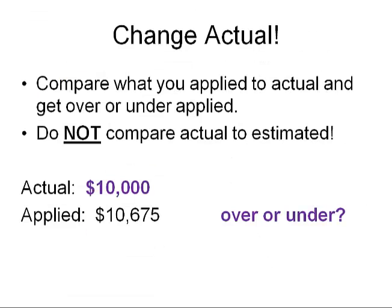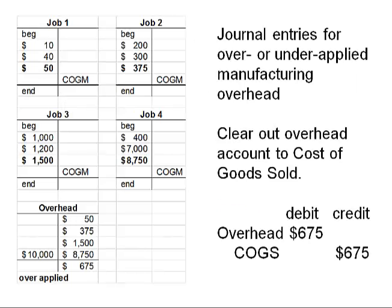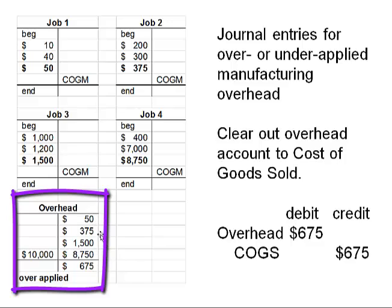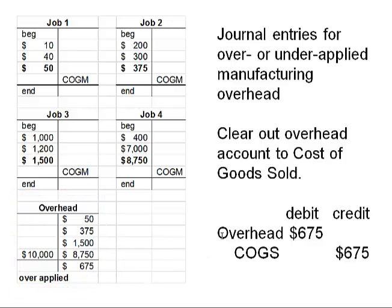Let's change the data. What if actual overhead was $10,000 and not $11,000? Did you over or under apply? You over-applied. We would still have the same amount applied to the four jobs, but now we have over-applied, leaving a dangling credit. We would clear that out by debiting the overhead account and crediting cost of goods sold. When we put too much into the jobs, too much goes into finished goods and too much goes into cost of goods sold, so we back it out at the cost of goods sold line. We don't go back and fix the actual job cost — we just do it as one entry at the end of the period directly to cost of goods sold.